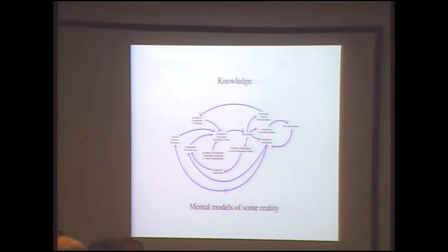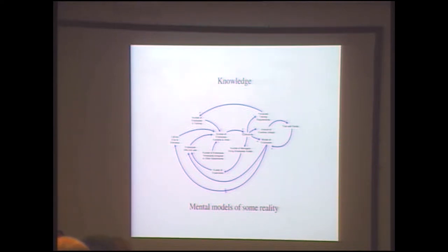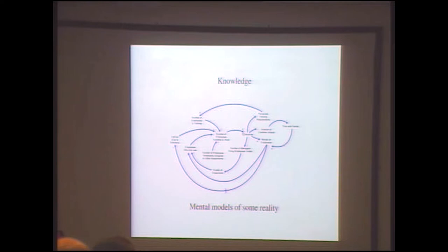What are we talking about when we talk about knowledge? Knowing about something means building, in our mind, models of some subject, of some reality. It is making a collection of concepts and relations between them — graph-like structures inside our mind. That's what we have in our mind when we understand something.